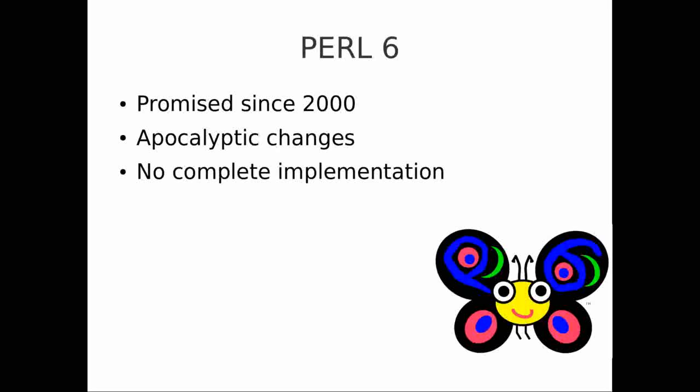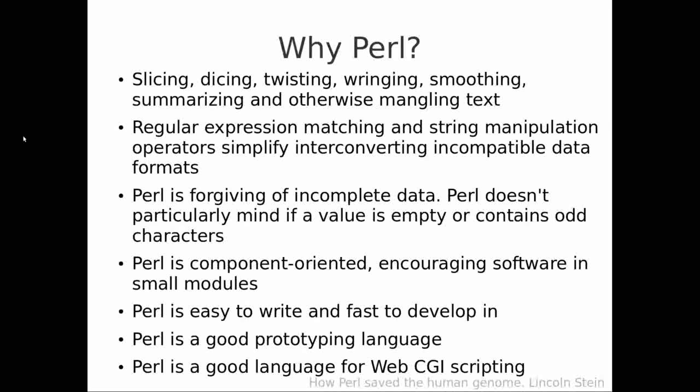So if you're thinking about programming in some language, why would you use Perl? There are a lot of reasons, and many of them came from an article written by Lincoln Stein, a bioinformatician who wrote a really important set of packages for manipulating CGI data — web-based data. The key points from Lincoln Stein's article, called 'How Perl Saved the Human Genome', are that Perl allows you to do things easily and quickly.